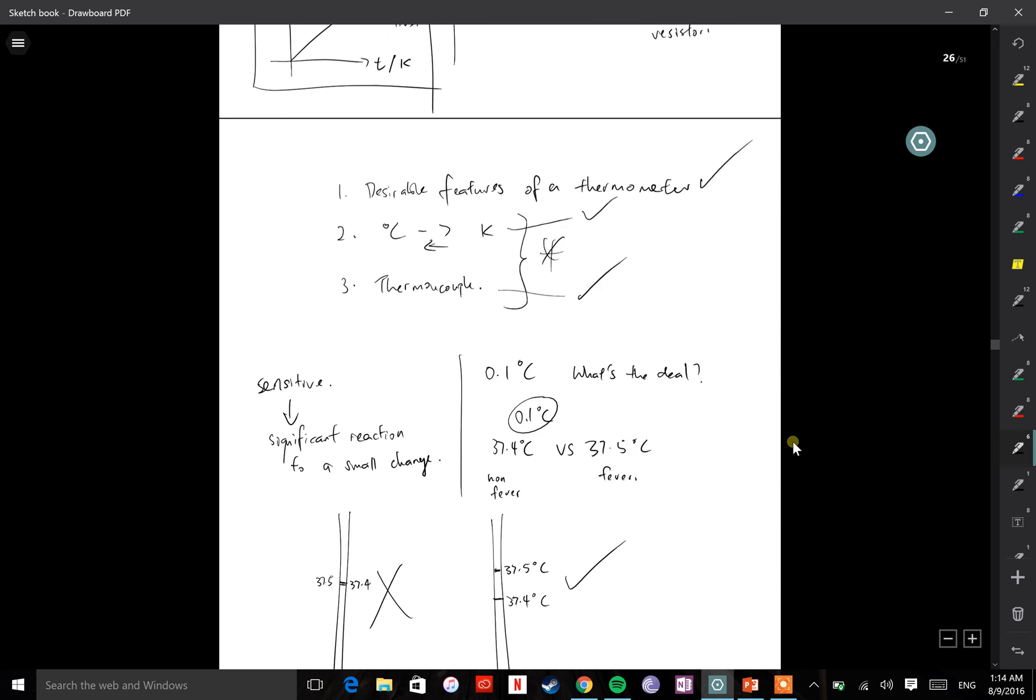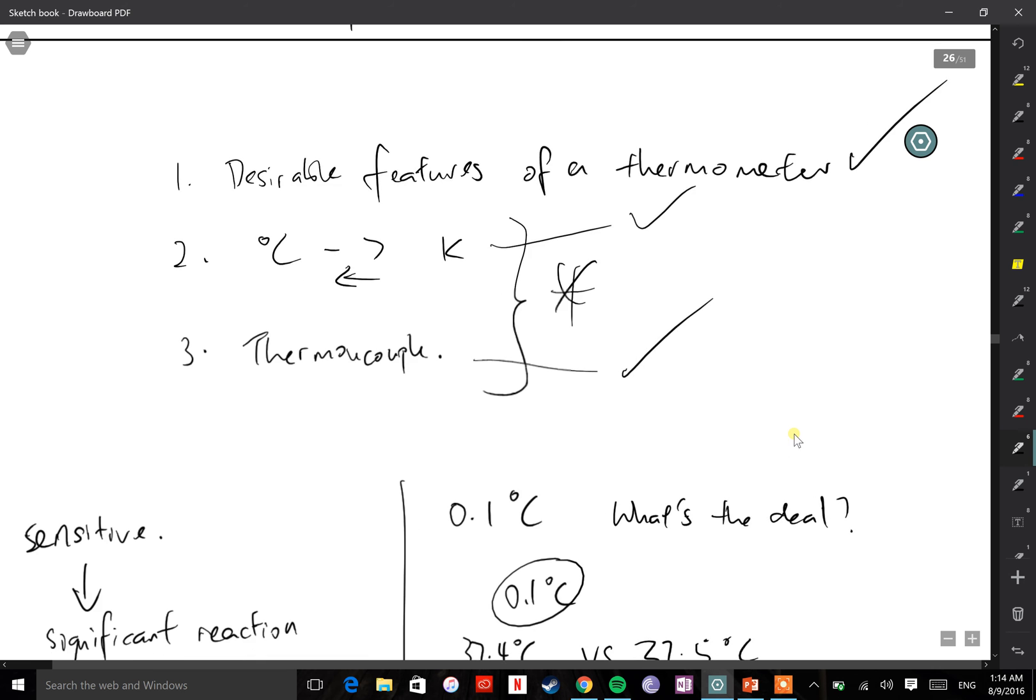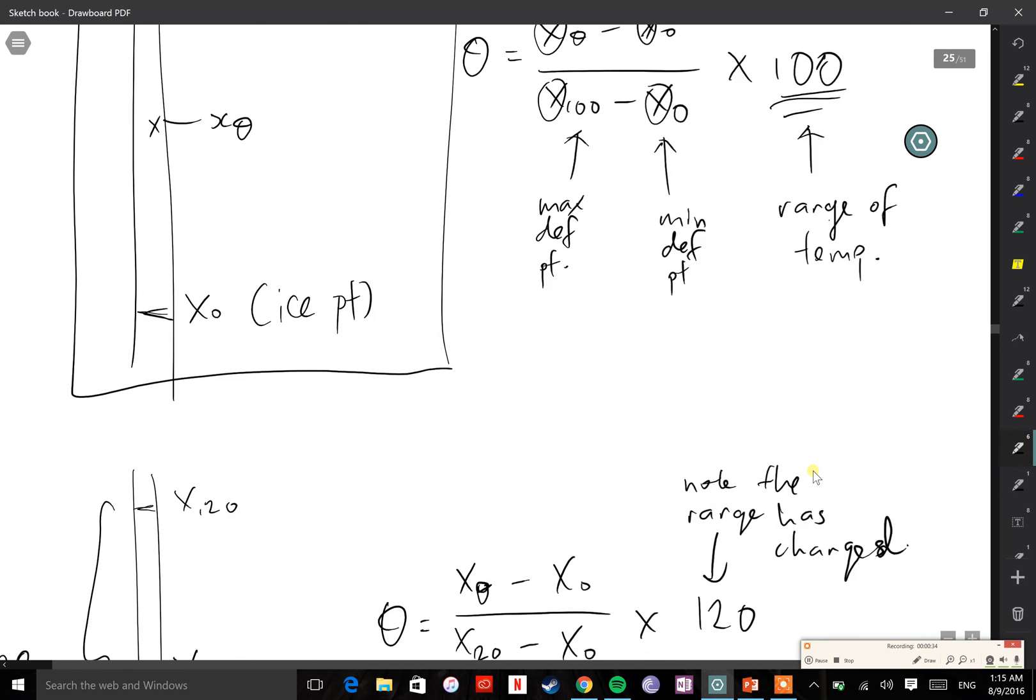Welcome back. Today we are going to talk about three things. Before that, I'll do a short recap about what we covered in the last lesson. These are the three things we're going to do today: the desirable features of a thermometer, degree Celsius to Kelvin, and finally thermocouple. I may not be able to finish all three in ten minutes, but we'll see what we can do.